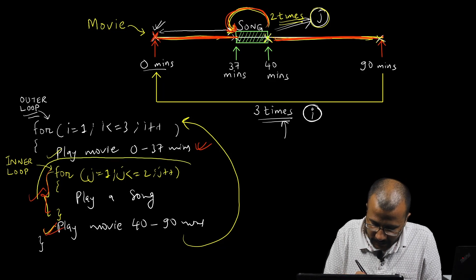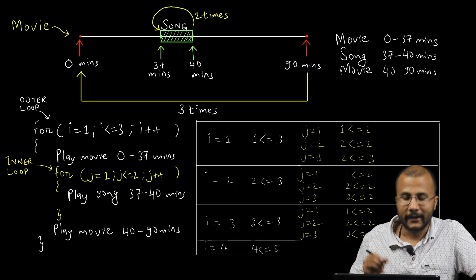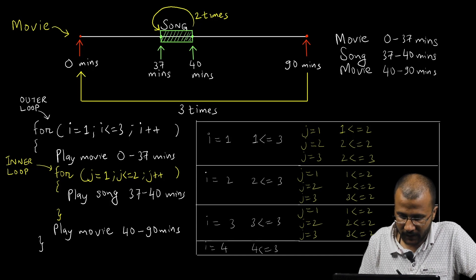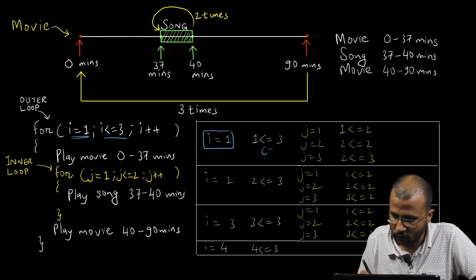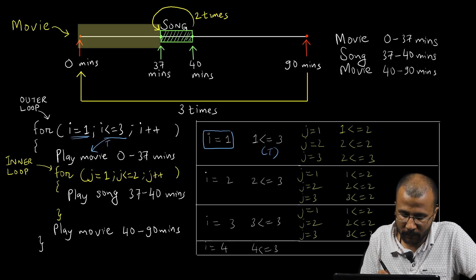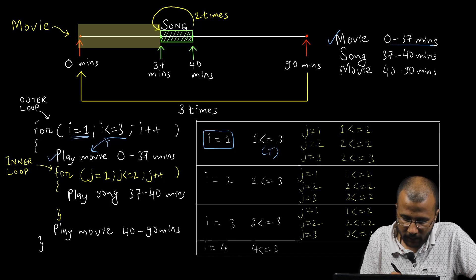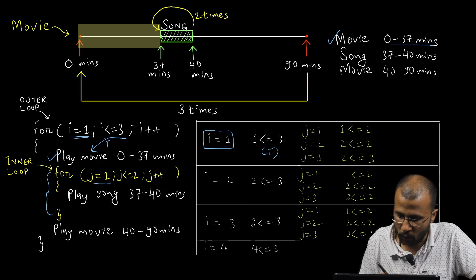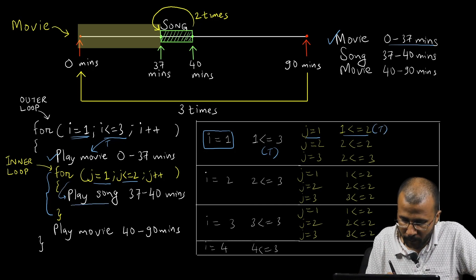Now let's trace through this code. The inner loop is effectively a statement inside the body of the outer loop. First, i is 1. We check: 1 less than or equals to 3 — true. We enter the loop body and play the movie from 0 to 37 minutes. Then we encounter the inner loop: j is initialized to 1. Condition 1 less than or equals to 2 is true, so we enter the inner loop body and play the song from 37 to 40 minutes.